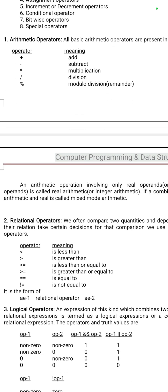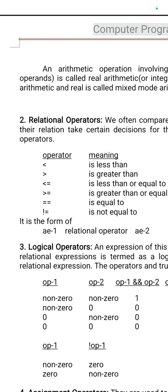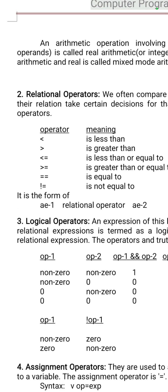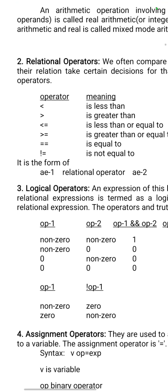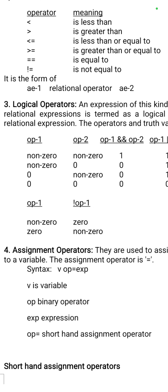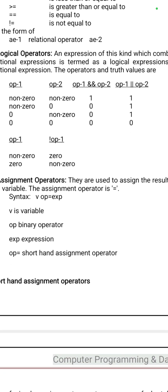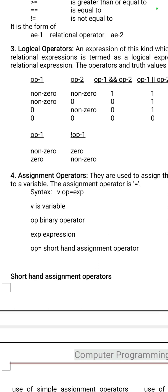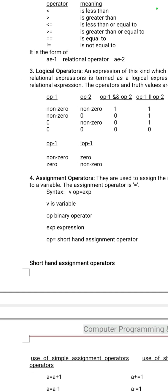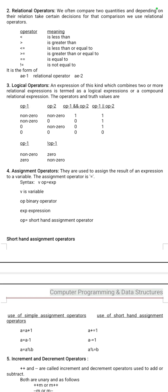Relational operators are: less than, greater than, less than or equal to, greater than or equal to. Those are relational operators. Logical operators — AND, OR, NOT. Assignment operator uses the equal-to symbol, which is used for assigning values.